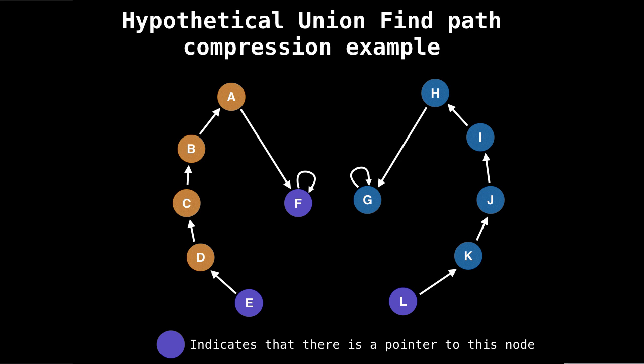So we found the root node of E, but with path compression, here's what we're going to do. Now that we have a reference to the root node, we're going to make E point to the root node. And similarly, D is going to point to the root node, and C and B and A. So now everything along the path E got compressed, and now points to that root node.